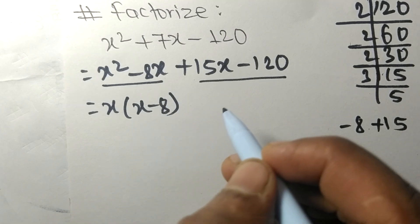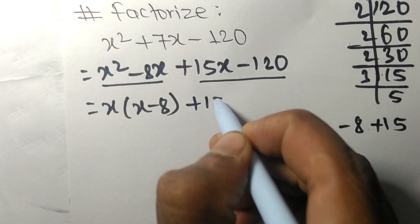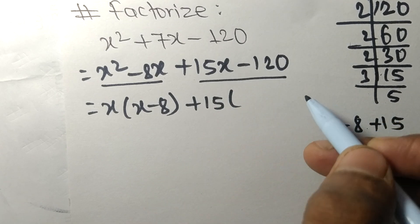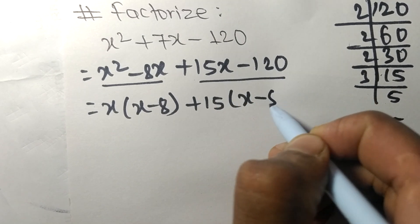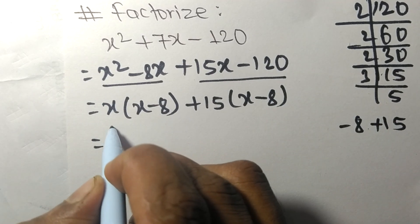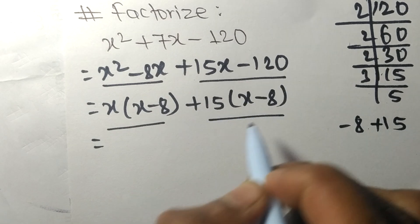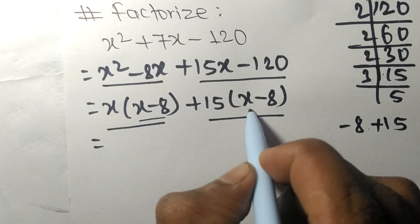The common in the last two is plus 15, so the remainder is x minus 8. Now we again find common factors in both terms. Both contain x minus 8.